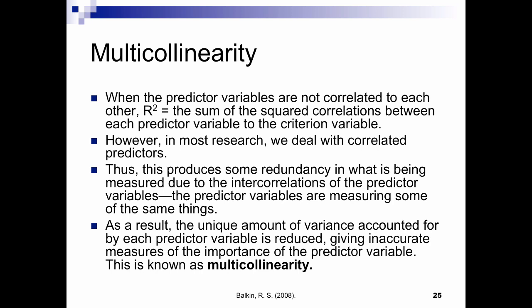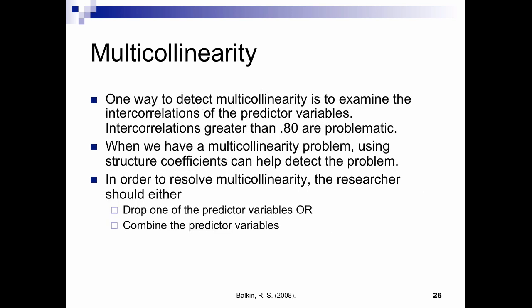When predictor variables are not correlated to each other, R-squared is the sum of the squared correlations of each predictor variable. But in most research we deal with, we have correlated predictors, which produces some redundancy. If our predictor variables are too heavily correlated, we have what's known as multicollinearity. We generally want to be aware of a multicollinearity problem when our predictor variables correlate at 0.80 or higher. When we have a multicollinearity issue, we might want to drop one of the predictor variables, or combine them so we're not looking at two separate predictors.